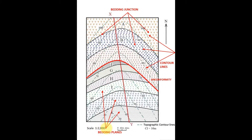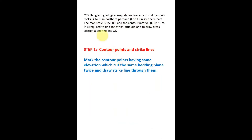The scale is 1:2000 and the contour interval is 10 meters. The question states: the given geological map shows two sets of sedimentary rocks, A to C in the northern part and F to K in the southern part. It is required to find the strike, true dip, and cross section along line XY. Step one is to plot points where contour lines intersect the bedding junctions twice and draw the strike lines.